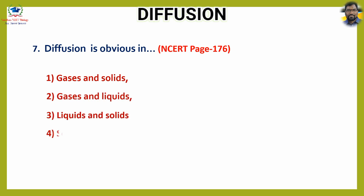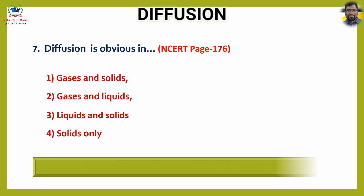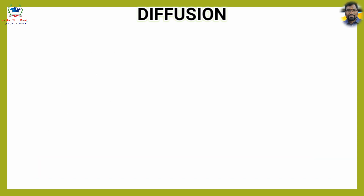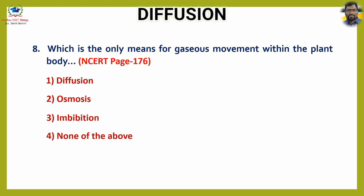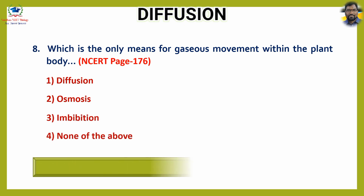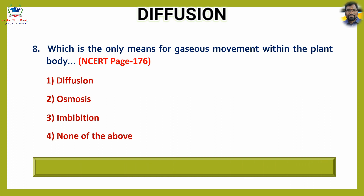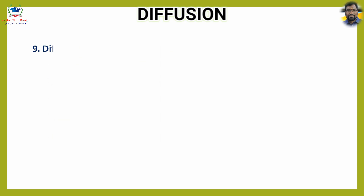Question number seven: Diffusion is obvious in — options: one, gases and solids; two, gases and liquids; three, liquids and solids; four, solids only. The answer is option two, gases and liquids. Question number eight: Which is the only means for gaseous movement within the plant body? Options: one, diffusion; two, osmosis; three, imbibition; four, none of the above. The answer is option one, diffusion.